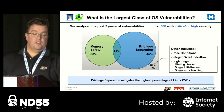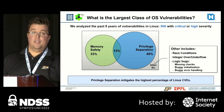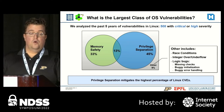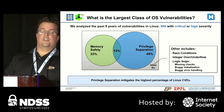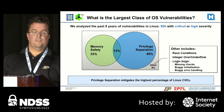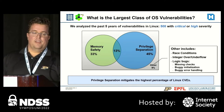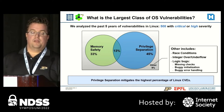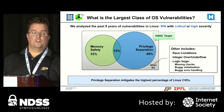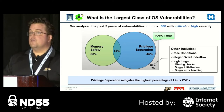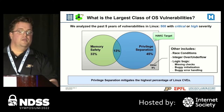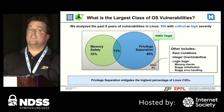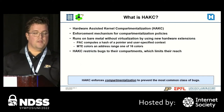Memory safety was a close second mitigation and interestingly, there was only a limited intersection of CVEs that would have been prevented had either mitigation been in place. Given its larger impact, we therefore decided to tackle the privilege separation problem, and the design we came up with is the HACKS system.